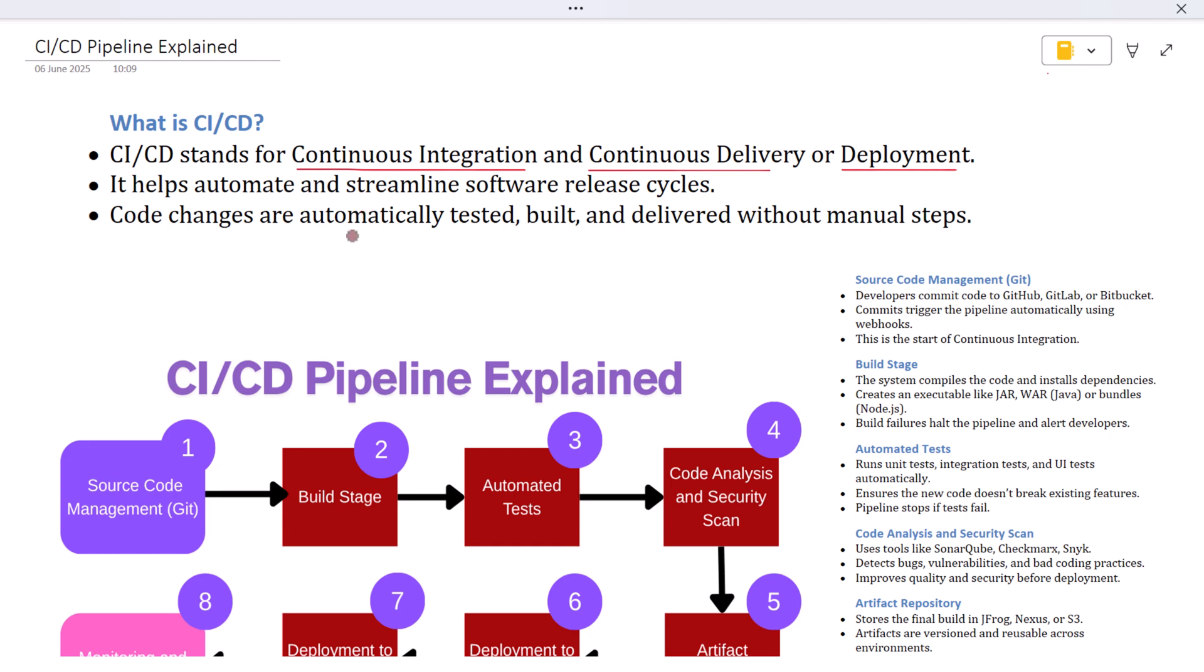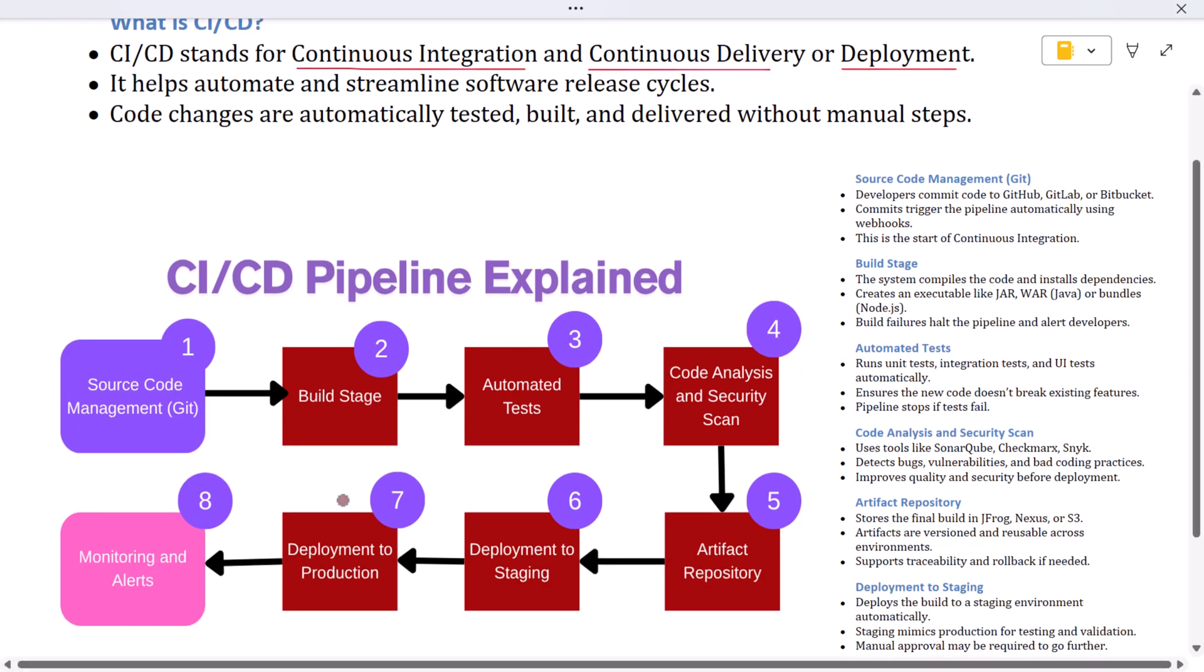CI/CD automates that flow, making releases faster, safer, and more consistent. Let's understand the CI/CD pipeline workflow step by step. Everything begins with code. Developers write their code and push it to a version control system like GitHub, GitLab, or Bitbucket. Think of this as the starting point of the pipeline.